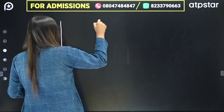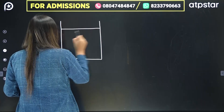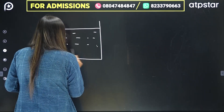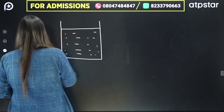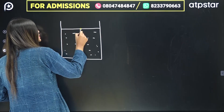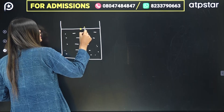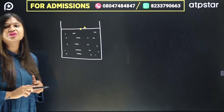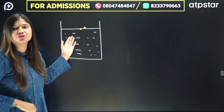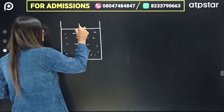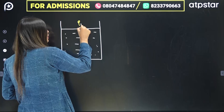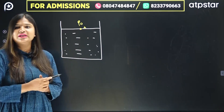Here there is a container which has liquid. If I consider a point A, how much pressure is on that point? The pressure there is the atmospheric pressure. The atmospheric pressure on here is P0. So this is at the top surface.